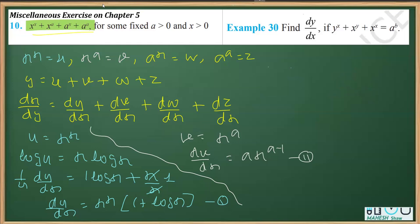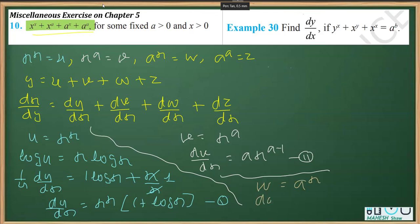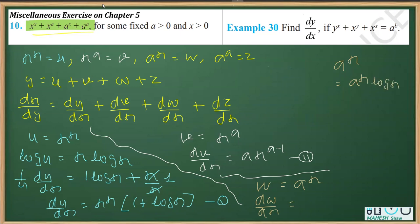For the next part: w = a raised to the power x. We should know that the differentiation of a^x with respect to x is a^x · log a. So dw/dx = a^x · log a.